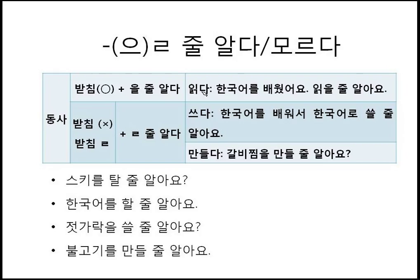For example, 읽다: the stem is 읽, and the last syllable has an ending consonant. In this case, 을 줄 알다 is attached: 읽을 줄 알아요, meaning 'I can read.' 한국어를 배웠어요 — I learned Korean — so 읽을 줄 알아요 means I can read Korean. In the case of 쓰다 and 만들다: 쓰다 has no ending consonant in its stem, while 만들다 ends with the ㄹ ending consonant. When there is no ending consonant or it ends with ㄹ, just ㄹ 줄 알다 is attached.